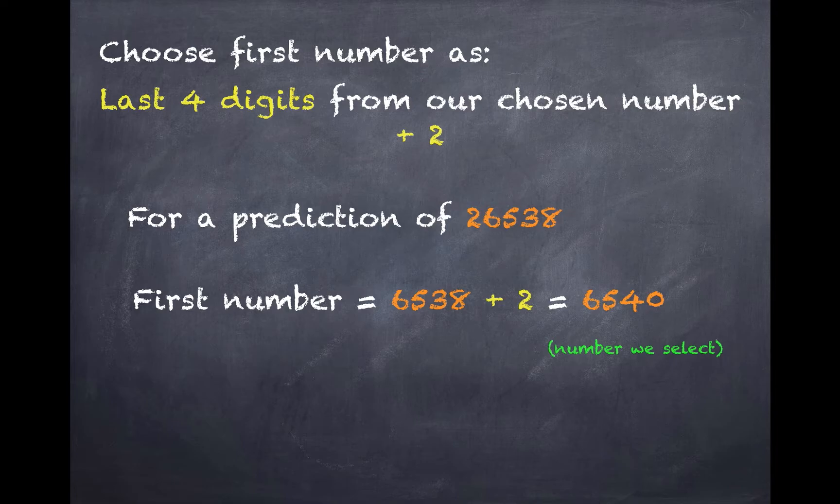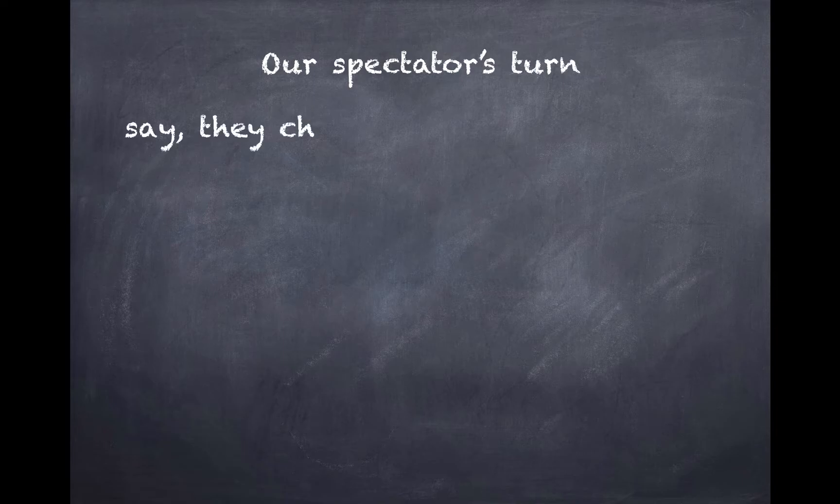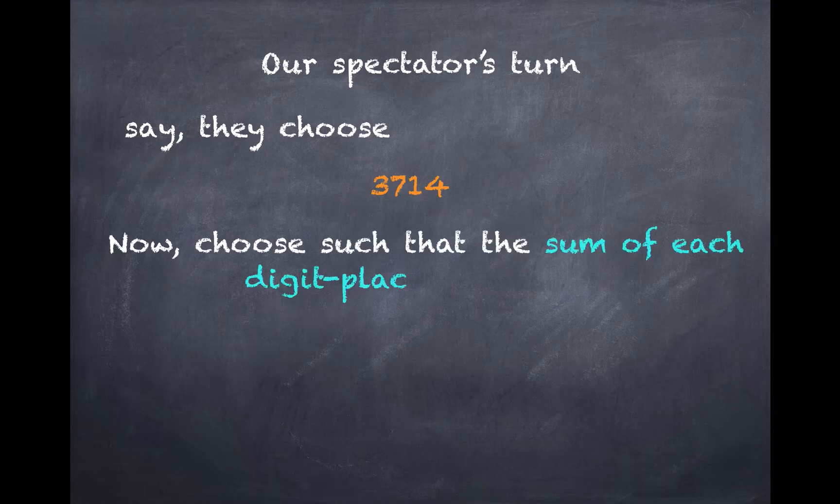So now, it's our audience's turn. So they can choose any number they want. Let's say they choose 3714. So now, we've got to be careful in choosing our next number. We choose such that the sum of each digit place becomes 9. So what do I mean by that?